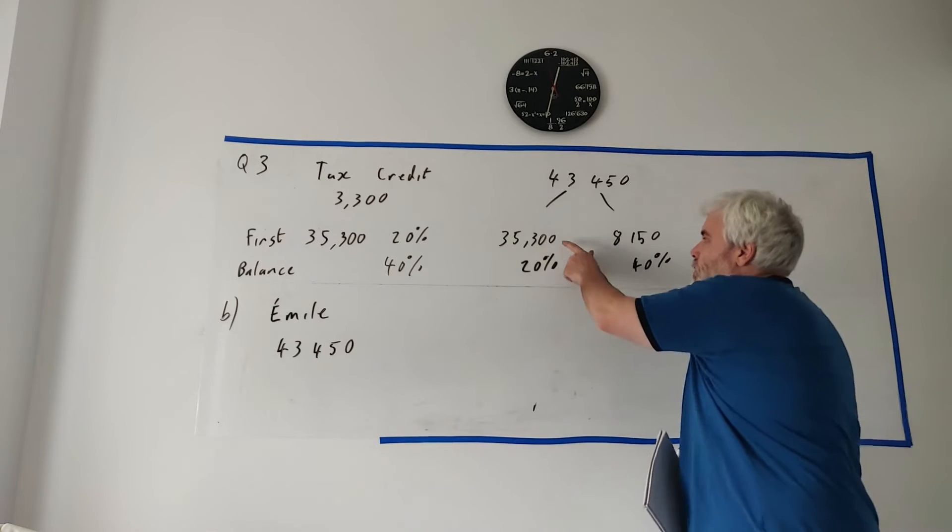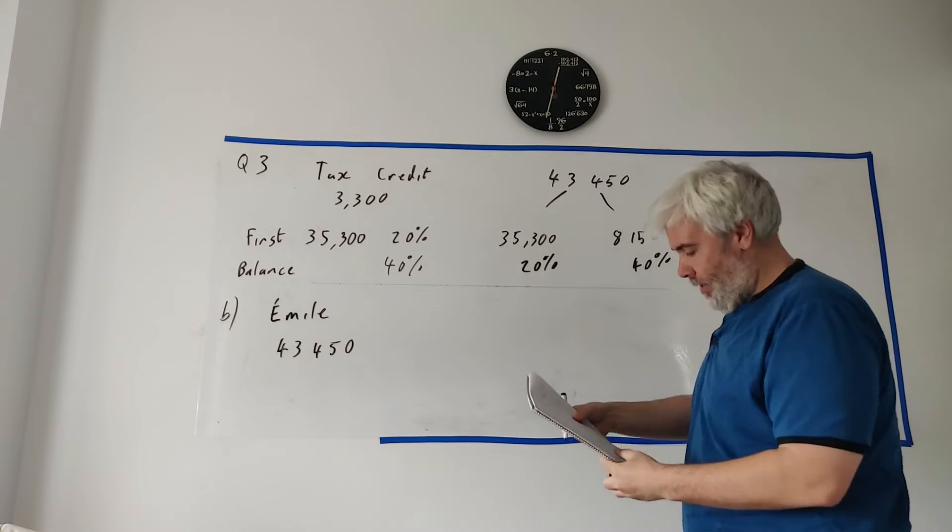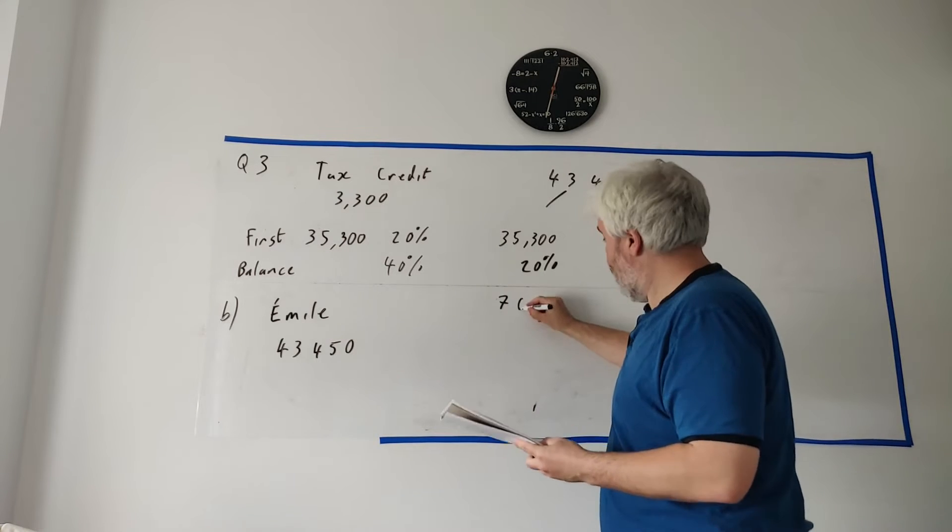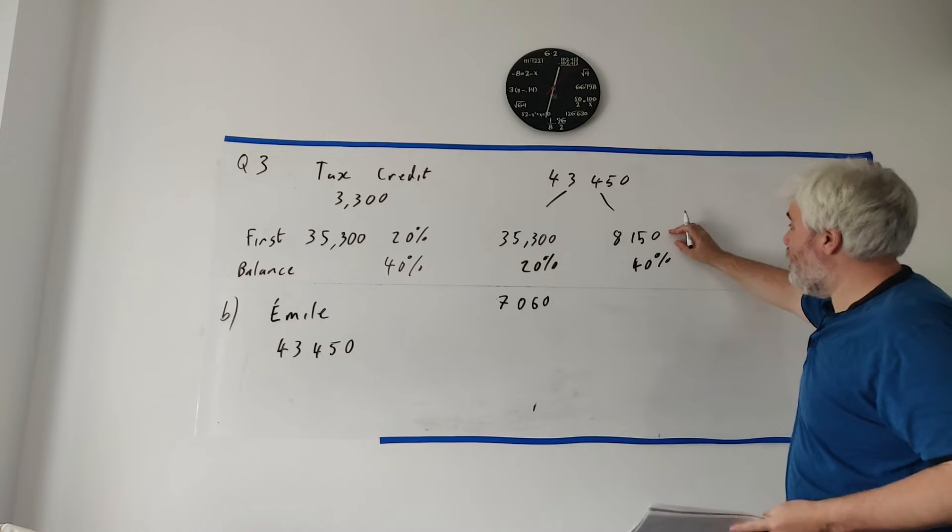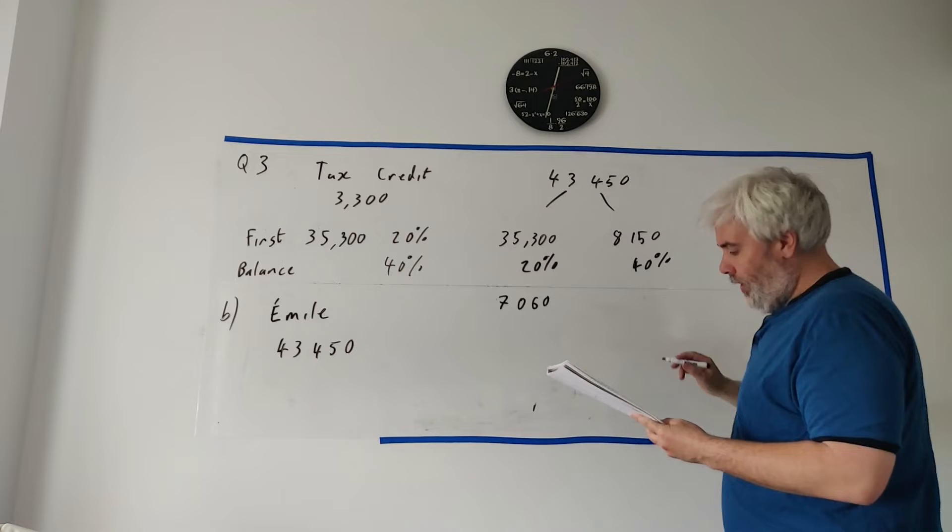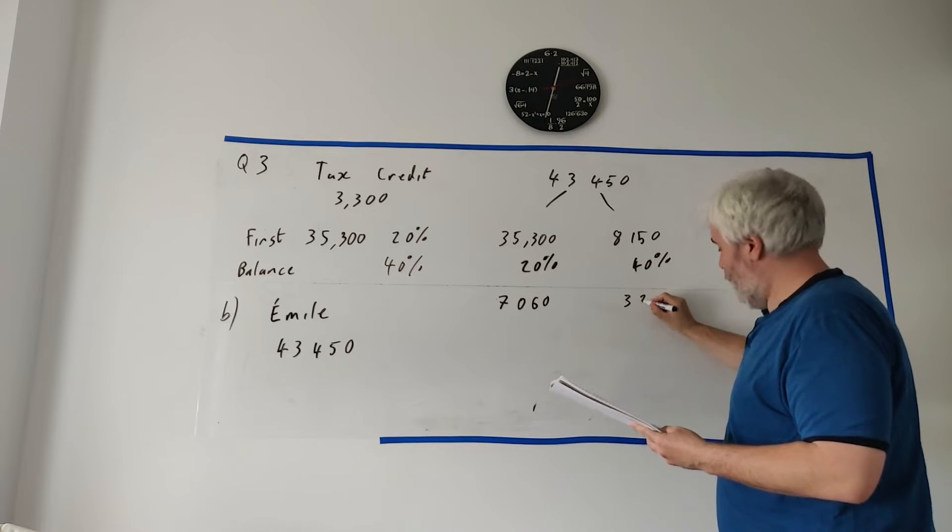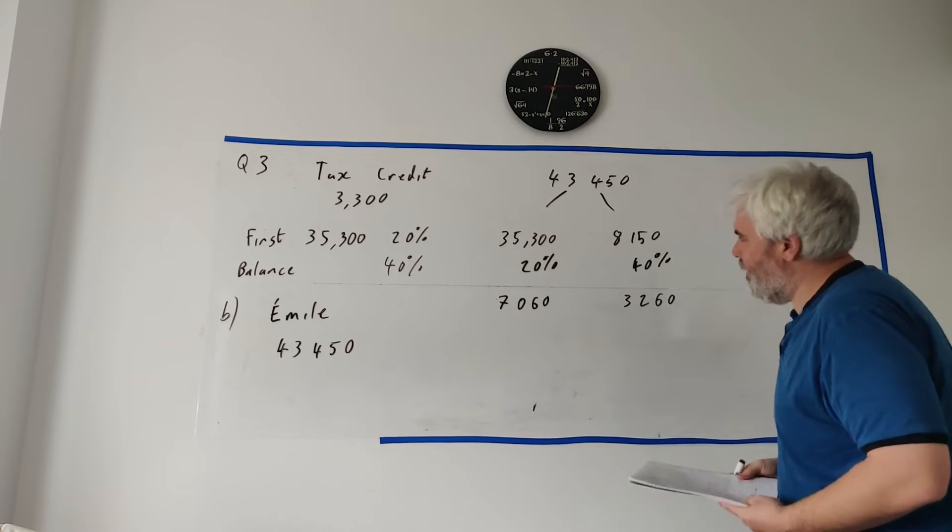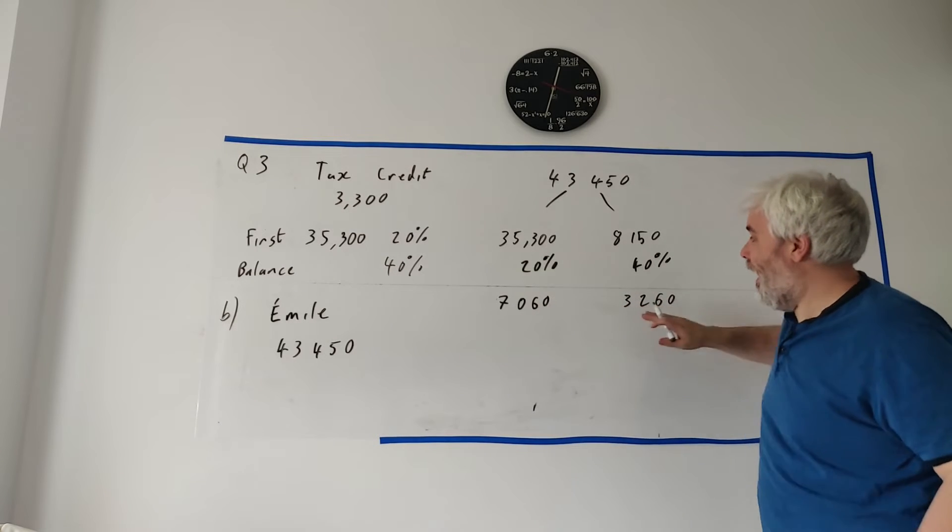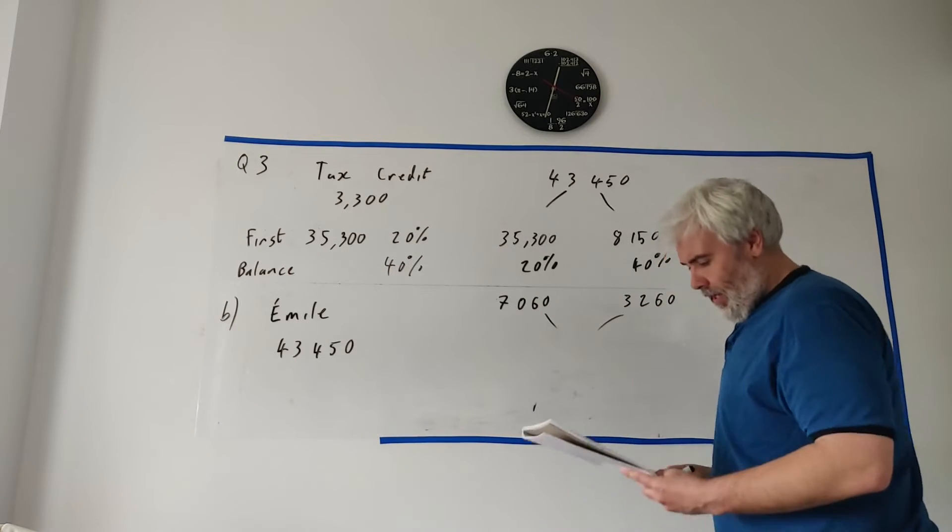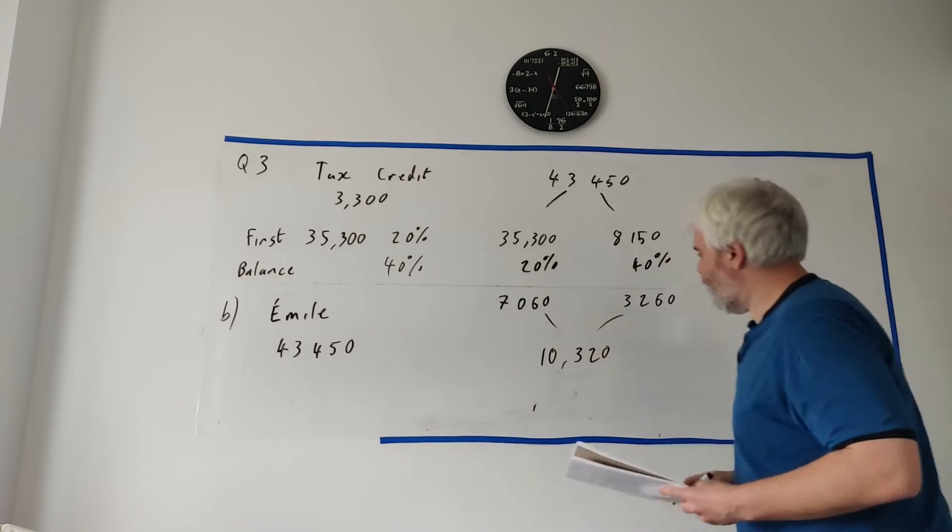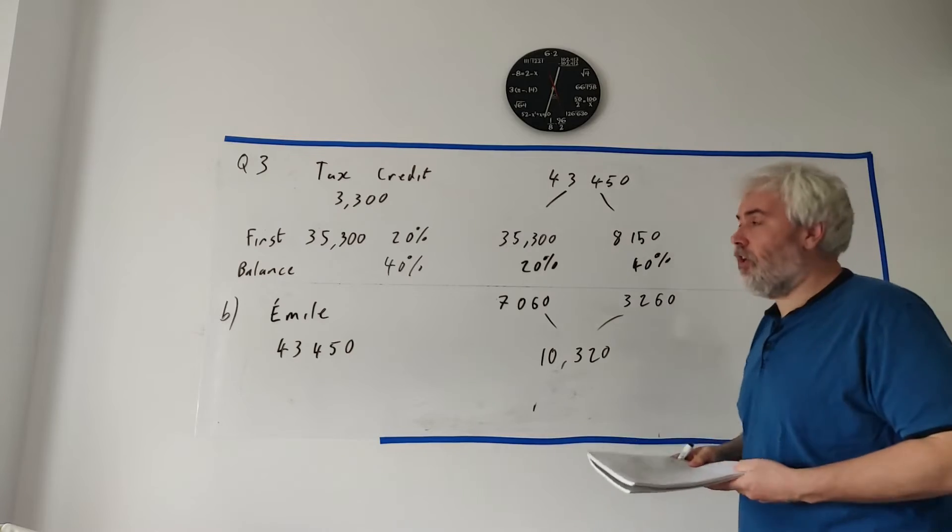This is going to be taxed at 20%. This is going to be taxed at 40%. So we work out how much tax she owes on this one. That will be 7,060. How much tax she owes on this: this number multiplied by 40% will give us 3,260. This is how much tax she has to pay. She has to pay this and this. Let's put it together. Add these together, we get 10,320. So that's how much tax she owes.